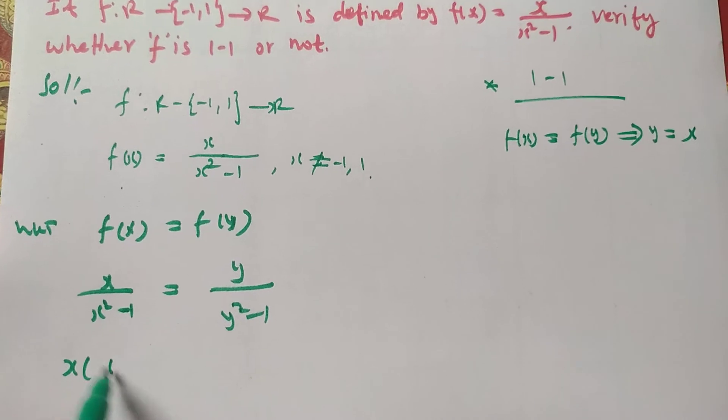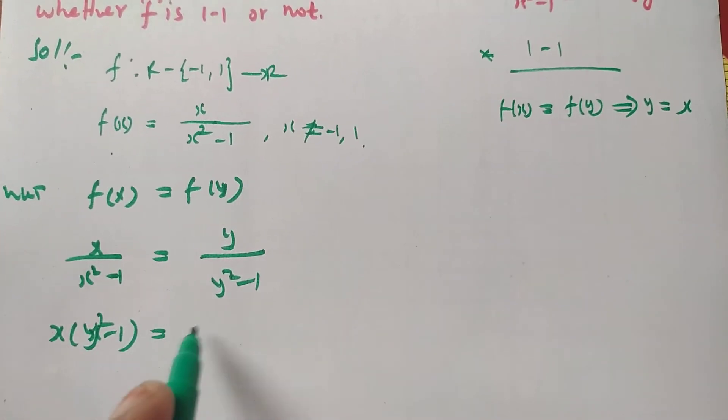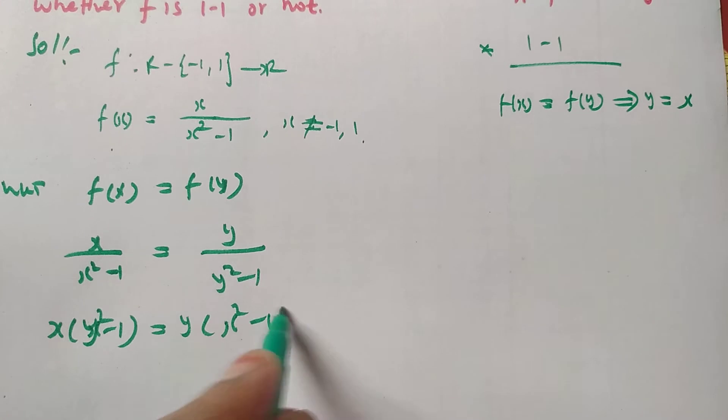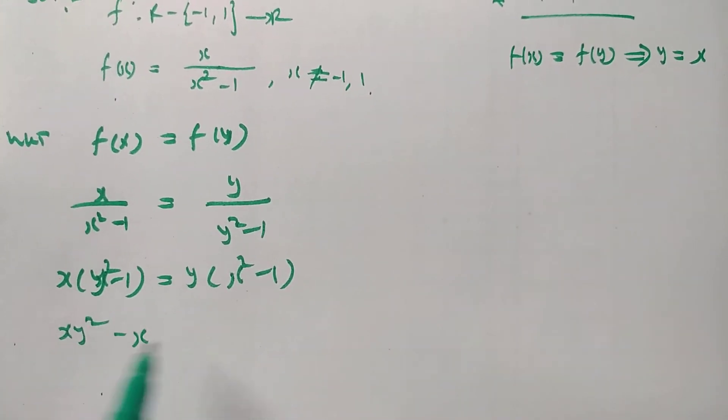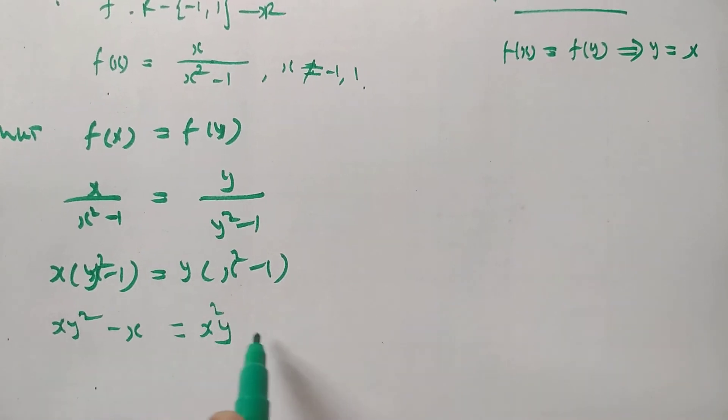Cross multiplication: x(y² - 1) = y(x² - 1). Expanding: xy² - x = yx² - y.